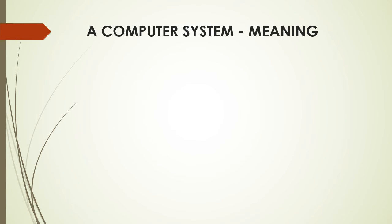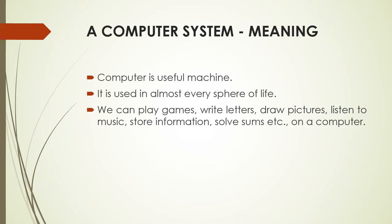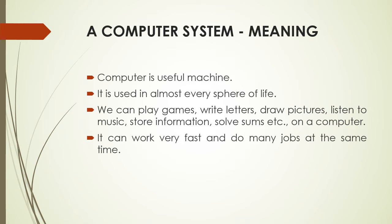Now first we will see a computer system. What is a computer? Computer is a useful machine. The basic definition: a computer is an electronic device which we are using in our day-to-day life. It is used in almost every sphere of life. We can play games, write letters, draw pictures, listen to music, store information, and solve sums on a computer. It can work very fast and do many jobs at the same time.